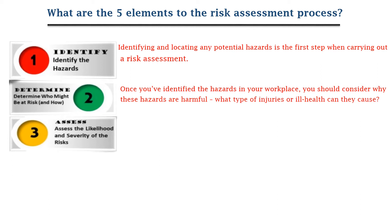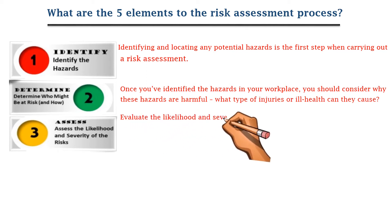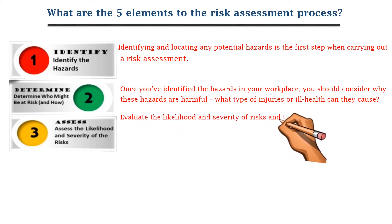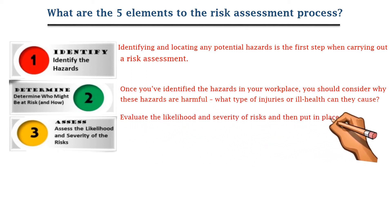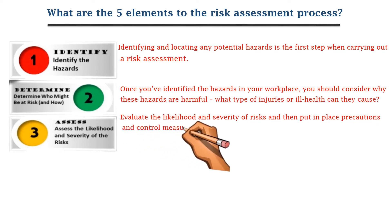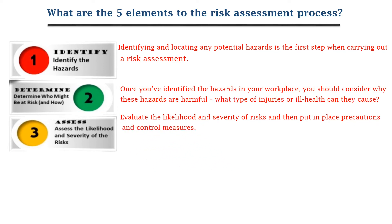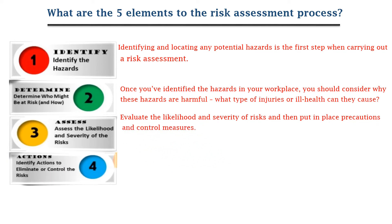The third one is to assess the likelihood and severity of the risk — evaluating the likelihood and severity, then putting in place precautions and control measures. The fourth one is action: identifying the actions to eliminate or control the risk.